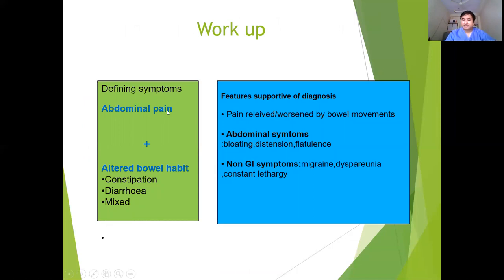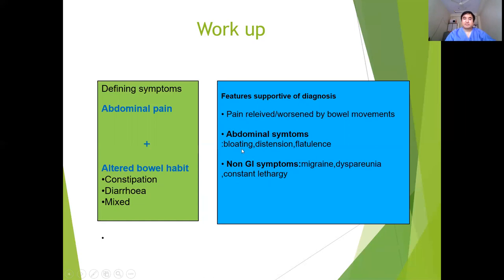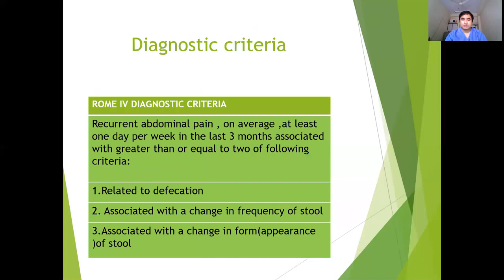The important history is that abdominal pain is the most common symptom, which may be associated with altered bowel habit — maybe constipation, maybe diarrhea, or both at different times. Features that support the diagnosis include pain that usually gets relieved by bowel movements, a history of abdominal bloating or distension, and the presence of other non-GI symptoms like headache or chronic fatigue.